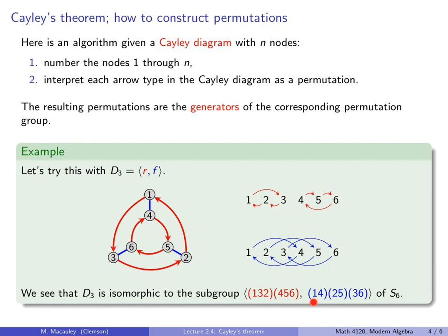And this one is (1,4)(2,5)(3,6). So now we have the generators of the group. So this is going to generate a group of order 6, which is a subgroup, meaning it sits inside S6, which has order 6 factorial, and I think that's equal to 720.